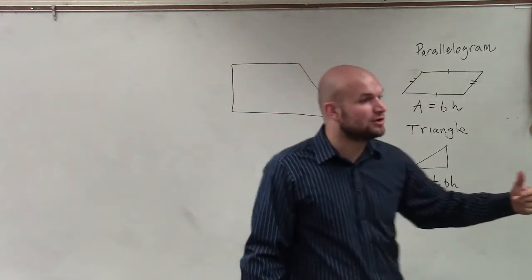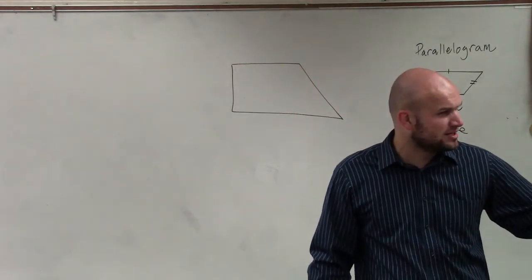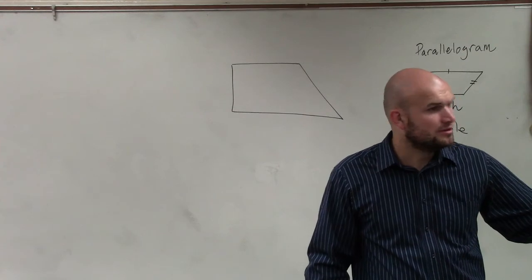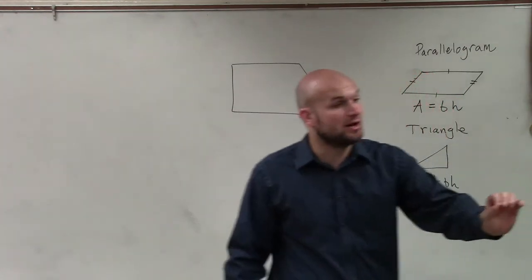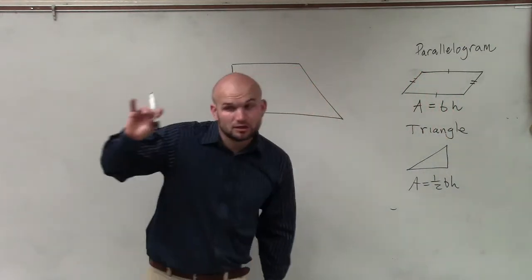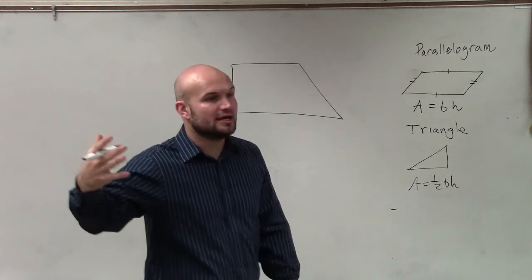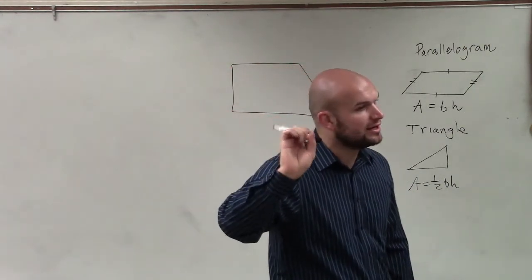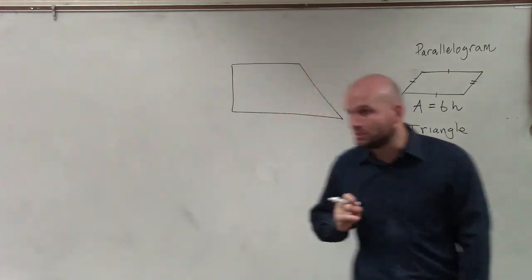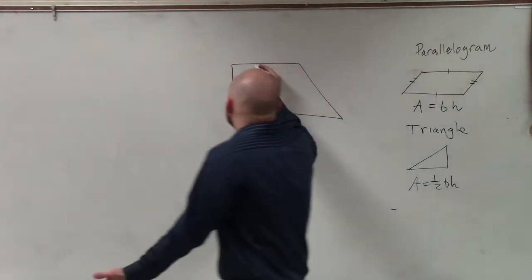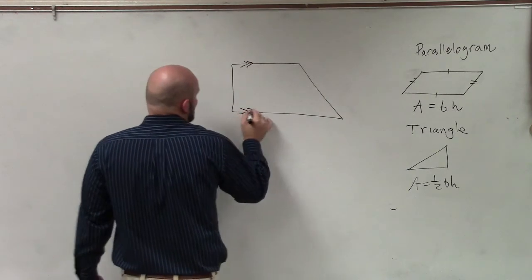However, to be a trapezoid—a parallelogram has two sets of parallel lines, but one thing we learned in Unit 6 was a trapezoid only has one set of parallel lines. That's it. That's all we need for a trapezoid: one set of parallel lines.